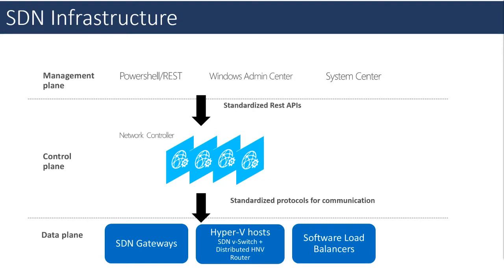Now I'll talk about the infrastructure of SDN itself. At the top is the management plane where you define network policy. There's a standard REST interface and PowerShell cmdlets. For a GUI-based tool, you can use Windows Admin Center or System Center Virtual Machine Manager. Policy is pushed to a centralized control plane — the network controller — which ships as a server role in the Azure Stack HCI operating system. It receives policy from the management plane, configures the data plane, and maintains goal state, remediating configuration drift whenever it happens.